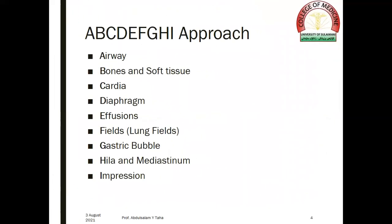The chest x-ray can be abbreviated by the letters A, B, C, D, E, F, G, H, I — in which A stands for the airway; B, bones and soft tissue; C, cardia; D, diaphragm; E, effusions; F, fields (that is lung fields); G, gastric bubble; H, hyla and mediastinum; and finally I stands for impression.